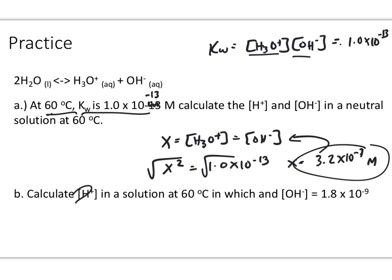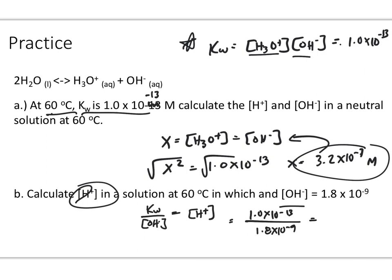If they give us the hydroxide ion concentration and want us to find the H+ concentration for a specific Kw, we take our equilibrium expression and solve for our H+ ion. Plugging in our variables, we get 5.6 × 10⁻⁵ M as the concentration of our H+ or hydronium ions. Remember: Kw represents the autoionization process of water and is determined by temperature. At 25°C, you need to know Kw = 1.00 × 10⁻¹⁴. At any other temperature, you will be given the new Kw value.